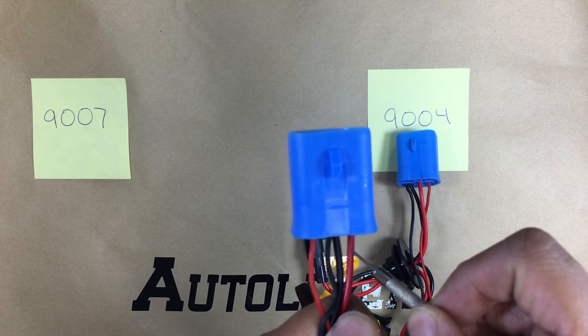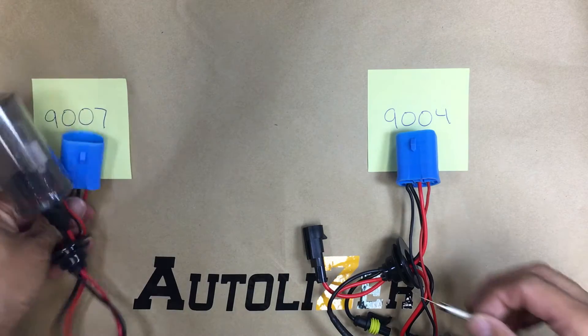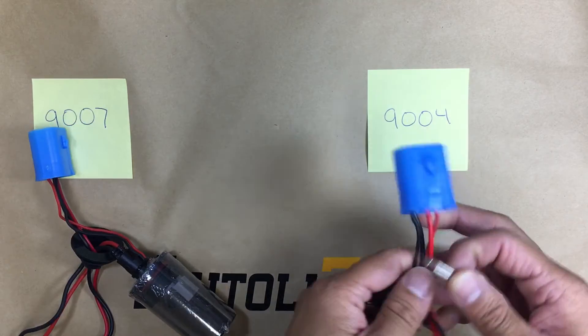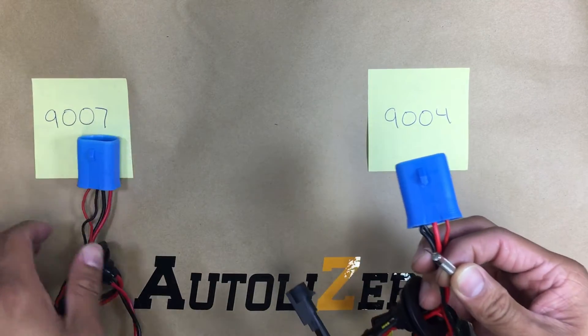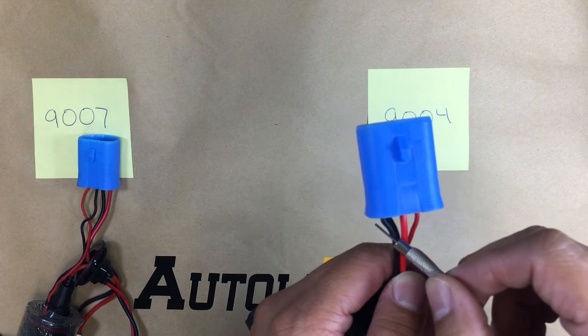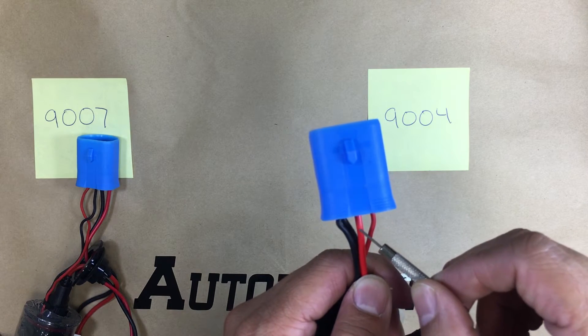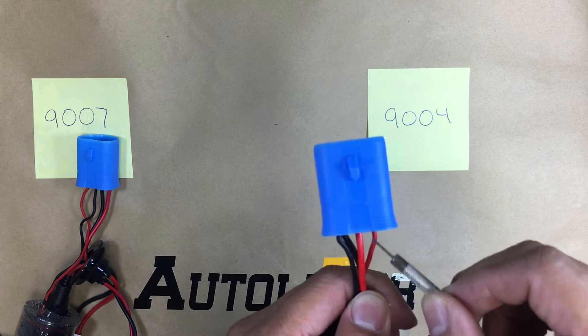The low beam is the fat red one. For 9004, the wires are a little bit switched around - it's a black wire on the left, the red low beam in the middle, and the high beam on the far right.